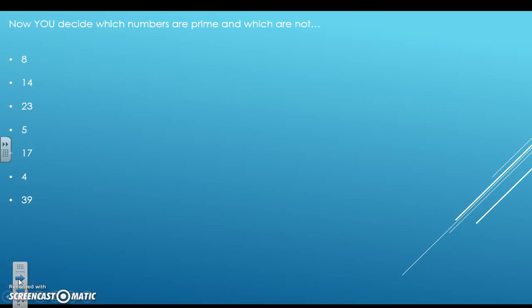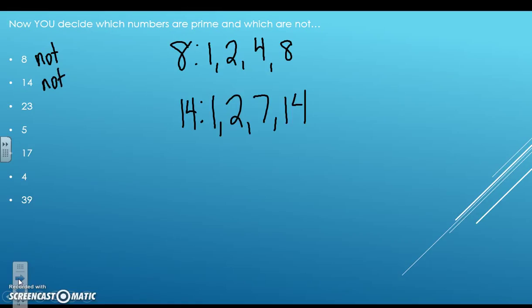So let's talk about whether these numbers are prime or not. Well 8, the factors of 8 are 1, 2, 4, and 8, so it is not prime. 14, the factors are 1, 2, 7, and 14, so it is not prime. 23, the factors of 23 are 1 and 23, so it is prime. The factors of 5 are 1 and 5, so it is prime.